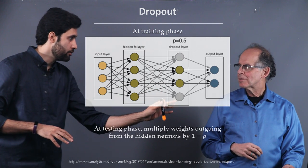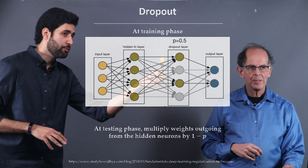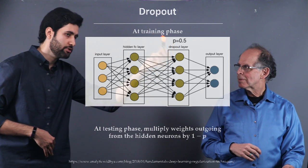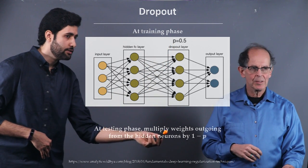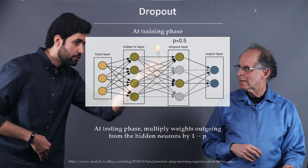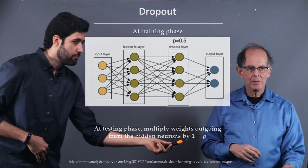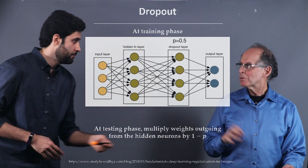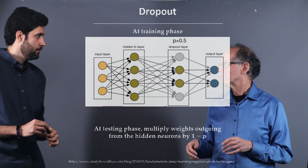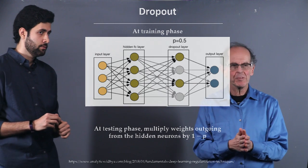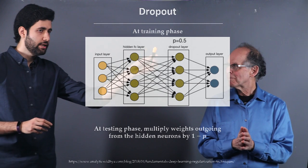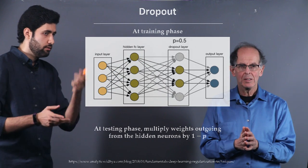If the probability of dropout was 0.5, or some P, then in test we multiply the output of that layer by 1-P. That would be true for any layer for which we apply the dropout — not just the layer before the output. Dropout can be applied on any layer.